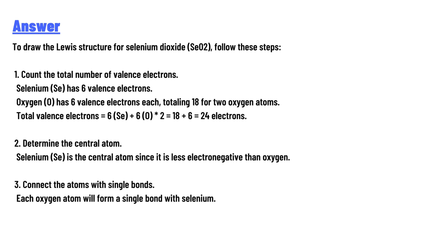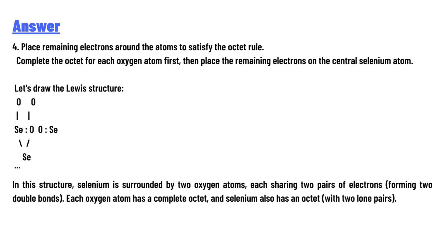Fourth, place the remaining electrons around the atoms to satisfy the octet rule. Complete the octet for each oxygen atom first, then place the remaining electrons on the central selenium atom. Let's draw the Lewis structure.